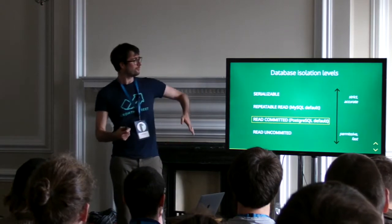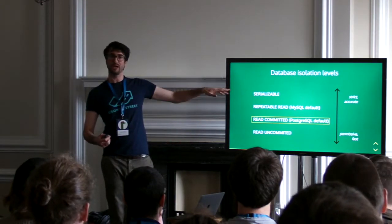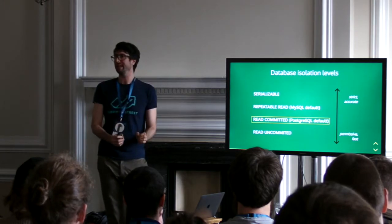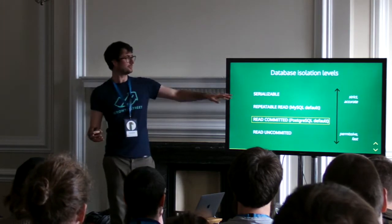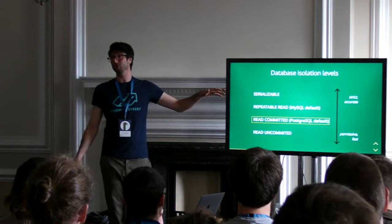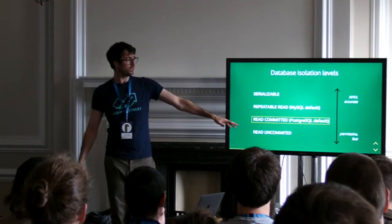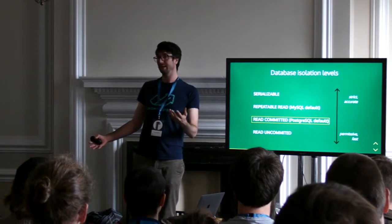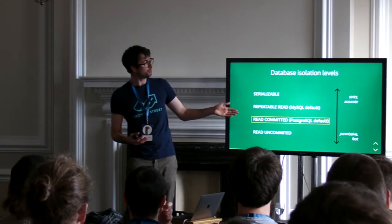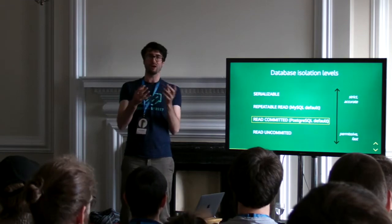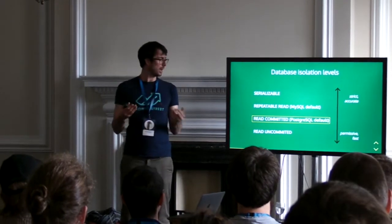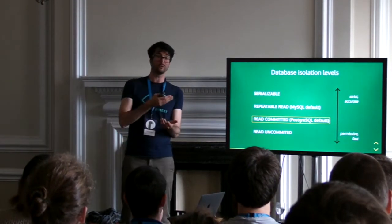I'm going to do a little deep dive into how databases handle concurrency. The first thing you need to know is the database isolation level. The isolation level is a kind of global setting on the database, and it specifies its strategy for dealing with concurrency. At one extreme you have serializable — really strict, very accurate, but at the expense of speed. At the other extreme, read uncommitted — really quick but not that accurate. In the middle you have repeatable read and read committed. Read committed is the Postgres default, and that's what I'm going to focus on.